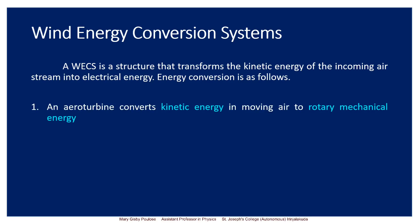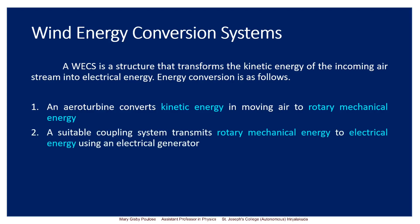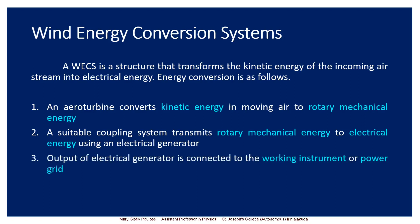A suitable coupling system transmits the rotary mechanical energy to an electrical generator. In the windmill, after the turbine blades are rotating, we get the rotary mechanical energy. This rotating energy is then given to the generator and hence electrical energy is generated. The electricity output of the electrical generator is connected to the working instrument or the power grid.